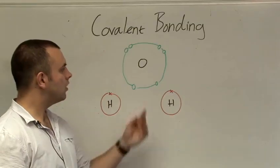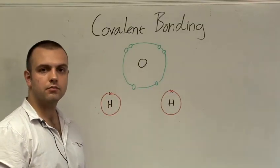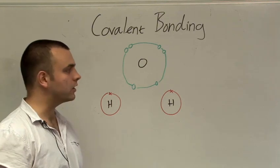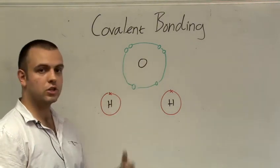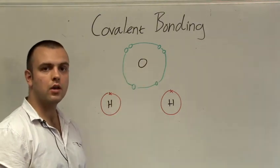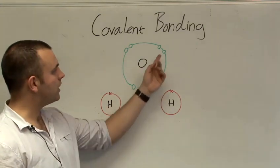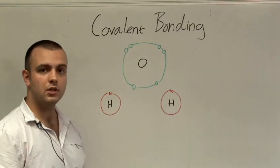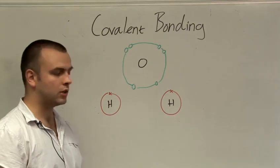Covalent bonding is another way of an atom gaining a full outer stable electron shell. It occurs between non-metals and non-metals unlike ionic bonding. Let's look at an example. Oxygen has an atomic number of eight. That means it has eight electrons orbiting it. I've omitted the inner shell here because that takes no part in chemical reactions. So we can see the six remaining electrons in the outer shell. It needs to gain two more to complete that shell.